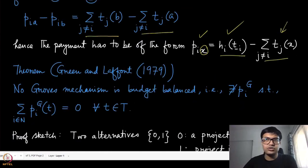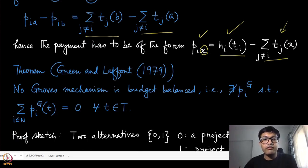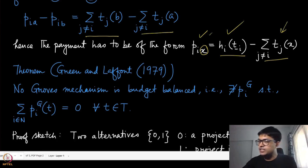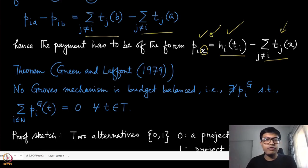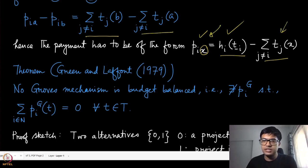The second result, also by Green and Laffont, says that no Groves mechanism is budget balanced. You cannot find any Groves mechanism that is also budget balanced. Therefore, if you are looking for an efficient and budget balanced mechanism, that set is null — this is an impossibility result.